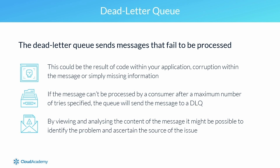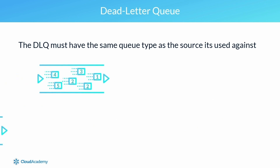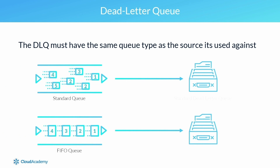A couple of points to note with dead letter queues: they must be configured as the same queue type as the source queue they are used against. For example, if the source queue is a standard queue, the dead letter queue must also be a standard queue type. Similarly, for FIFO queues, the dead letter queue must also be configured as a FIFO queue.